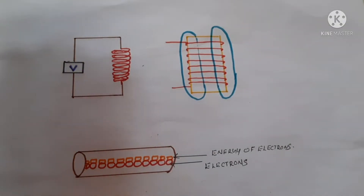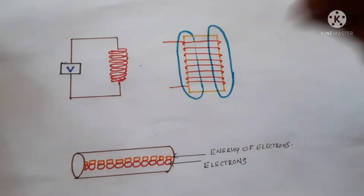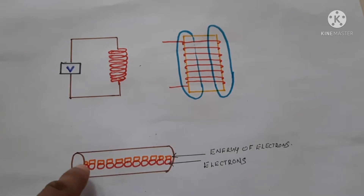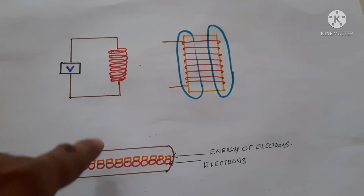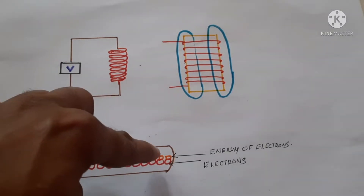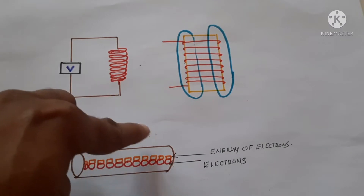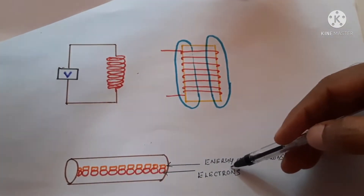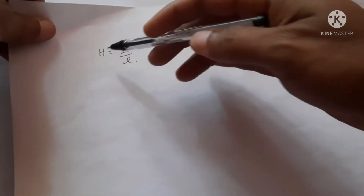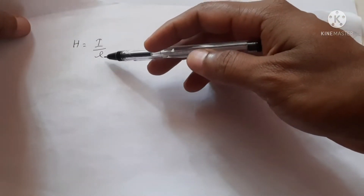Welcome. Today we are going to discuss what is an inductor and what is inductance. This is an inductor. When we take a wire and a current is passing through it — current is the flow of electrons, and each electron carries energy — a magnetic field is generated around the wire. The magnetic field H is directly proportional to the current I, meaning if more current flows through this wire, more magnetic field will be generated.